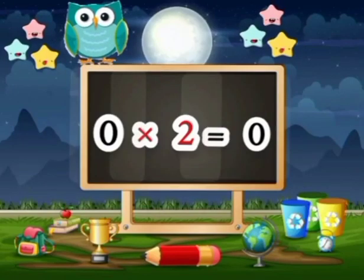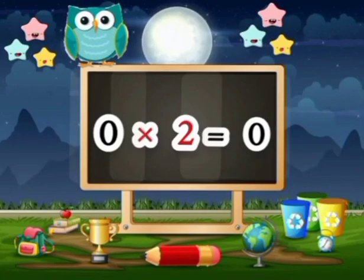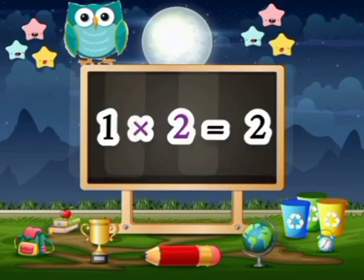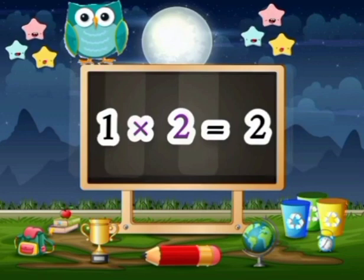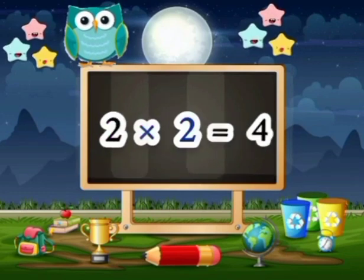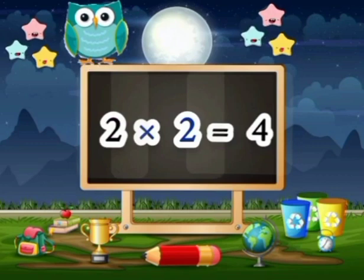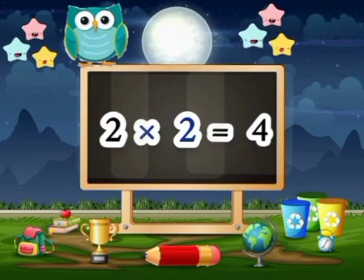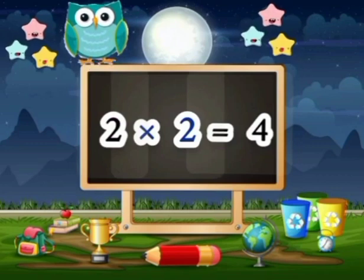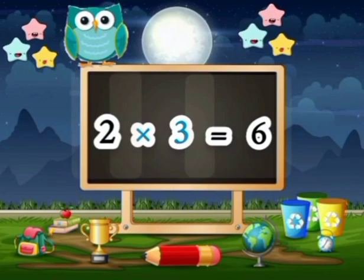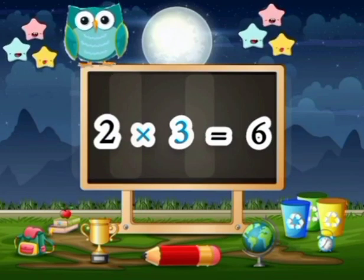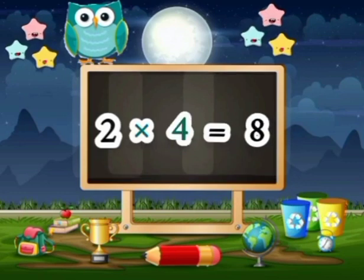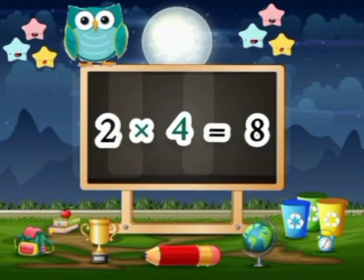0 times 2 is 0. 1 times 2 is 2. 2 times 2 is 4. 3 times 2 is 6. 4 times 2 is 8.